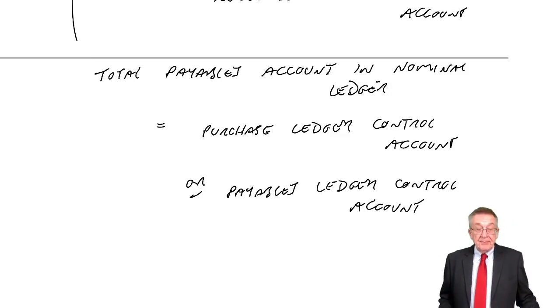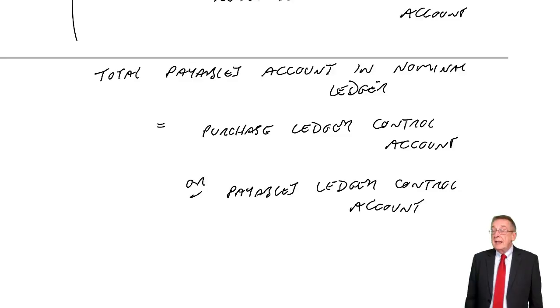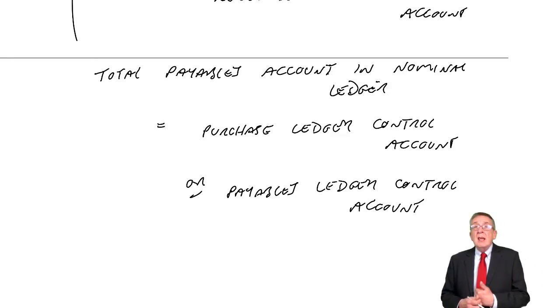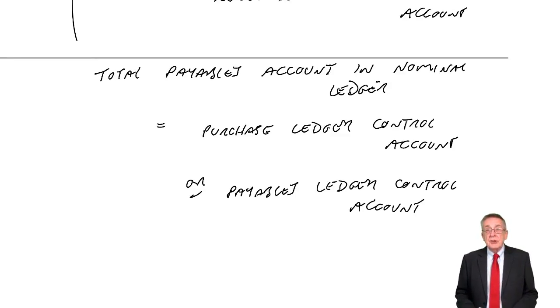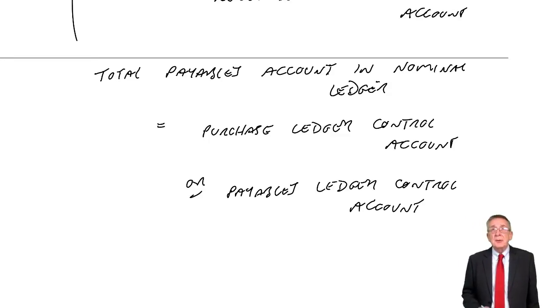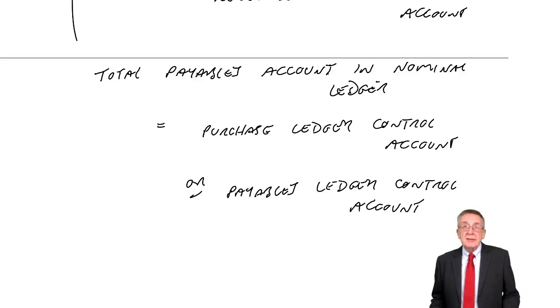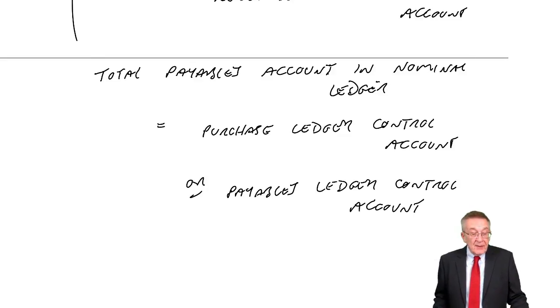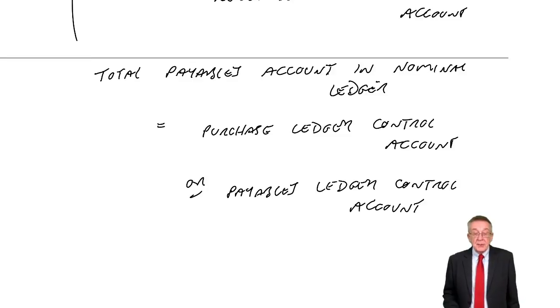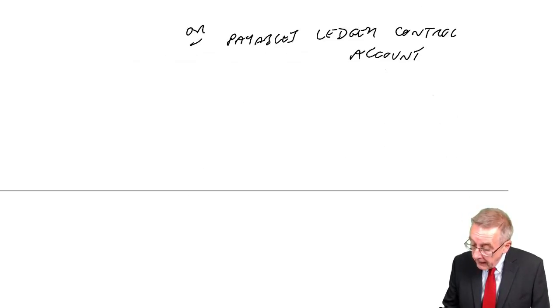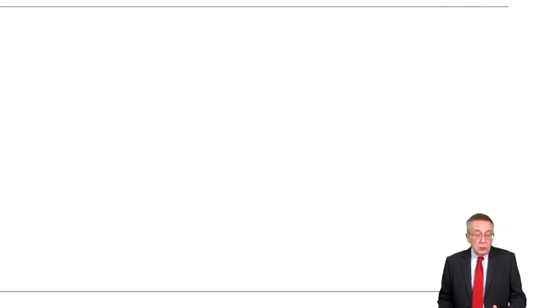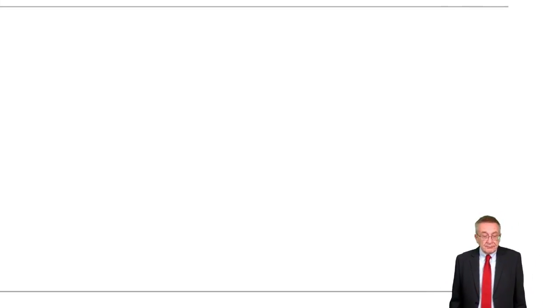That was quick revision of what we did in the lecture on books of prime entry. Now I need to show you three extra entries that could be relevant in exam-type questions which we didn't discuss before: returns, discounts, and contra entries.